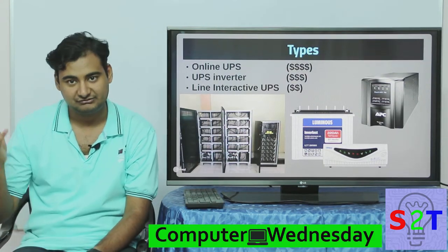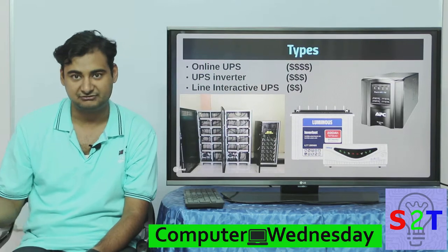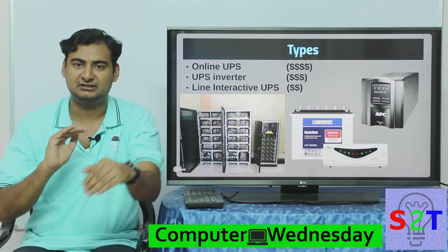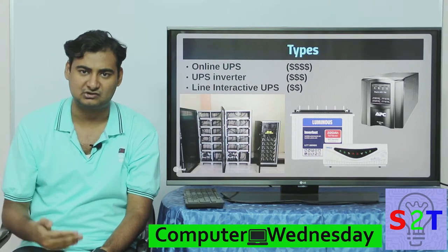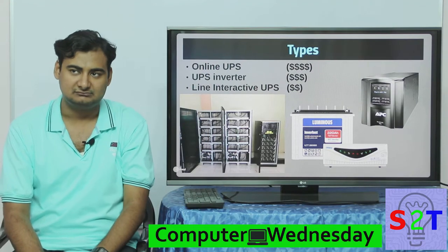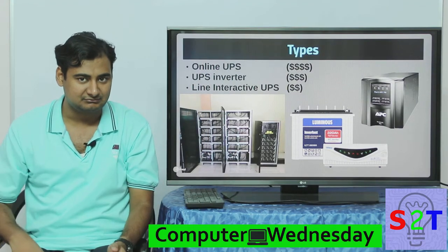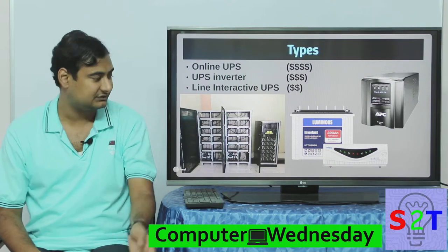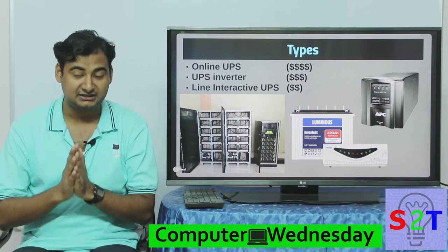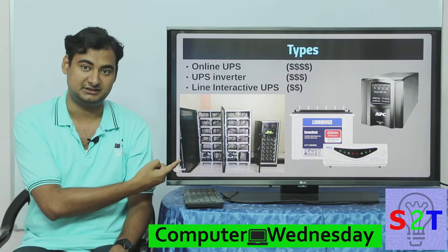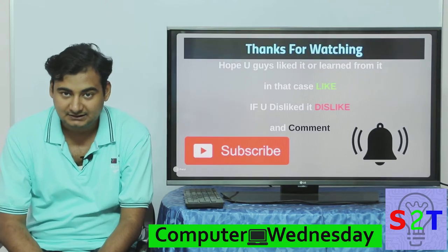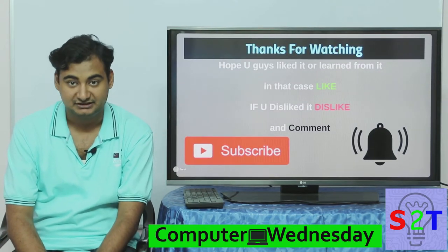The cheapest type is the line interactive UPS. It has a built-in stabilizer — so if you have over-voltage, it will control it, and if you have under-voltage, it will boost it. If you have good power conditions with no voltage drops or spikes, this will serve you fine. If your power is generally good but blackouts can last two to three hours, this type can get you by. However, if you are running very critical operations, you'll want to employ a higher-tier UPS regardless of power quality.